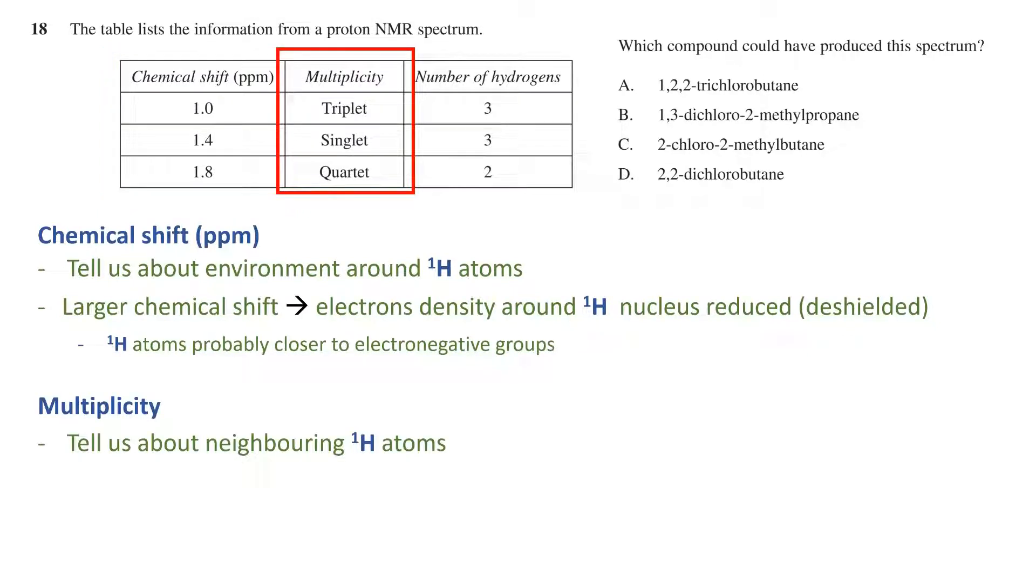The multiplicity tells us about how many hydrogens there are on neighboring atoms next to the hydrogen that produced the signal. That is, there will be N plus 1 peaks for N neighboring hydrogens due to peak splitting.